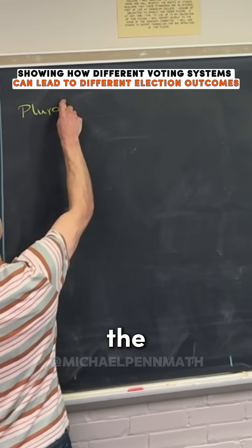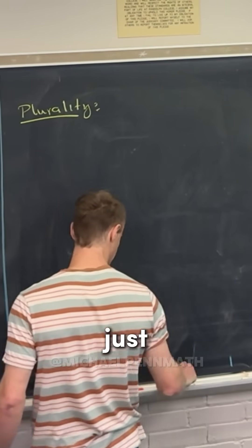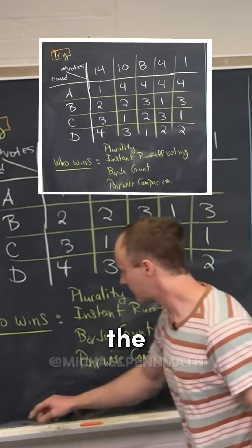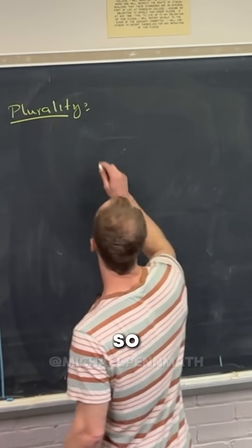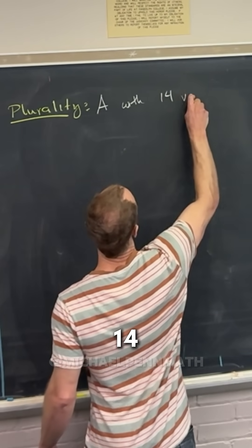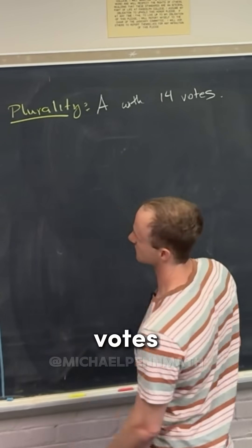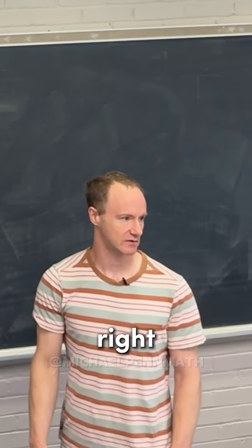Starting off, let's look at the plurality winner. So that's just simply you look at the candidates and see who has the number of first place votes. So A with 14 first place votes, which in this case is quite a bit less than 50%, right?